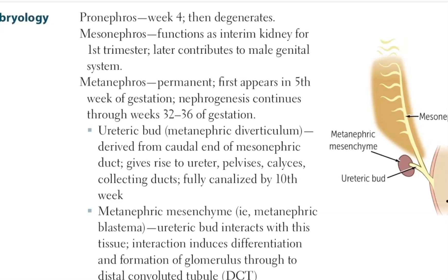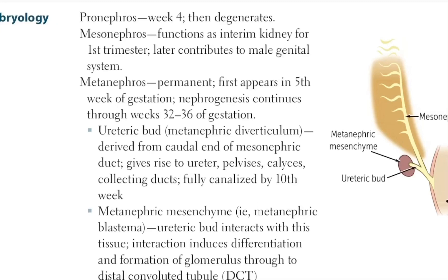One important point: the ureteric bud canalizes by the 10th week. To summarize the timing — the pronephros degenerates by the 4th week, the metanephros forms in the 5th week and continues to the 32nd to 36th week, and the ureteric bud canalizes by the 10th week.